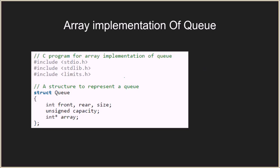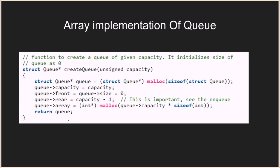Now let's get to the C implementation of the queue. Here you have the standard header files, then a structure queue which has three elements: front, rear, and size. Front and rear keep the value of the front and rear indices, and size keeps the count of number of elements currently in the queue. Then you have a capacity which holds the actual capacity of the queue — for example five elements. If the array has a capacity of five and currently two elements are present, then capacity equals five and size equals two. Then you have the integer array which is the actual queue where elements are stored.